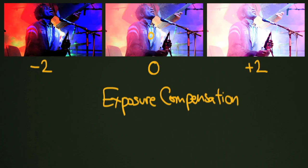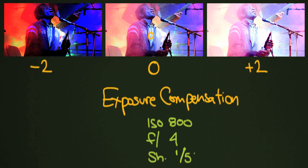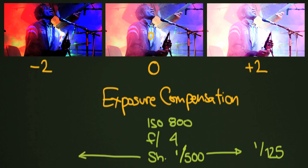If you shoot in manual mode like me, it's pretty easy. Say this image was taken at ISO 800, f/4, and a shutter speed of 1/500. To overexpose by two stops, I would move two stops down from 1/500 — half of 500 is 250, and half of that is 1/125. To underexpose by two stops, I'd go the other direction: 500 times 2 is 1,000, times 2 is 2,000 — so I could take a photo at 1/2000th of a second.